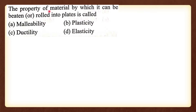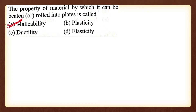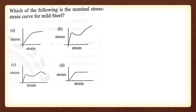Next question: the property of material by which it can be beaten or rolled into a plate is called malleability. Option A is the correct answer. Ductility refers to the material being elongated before fracture.